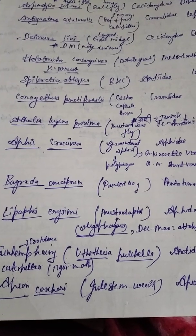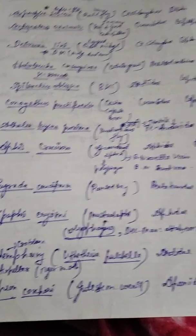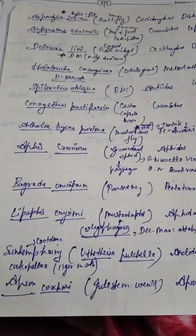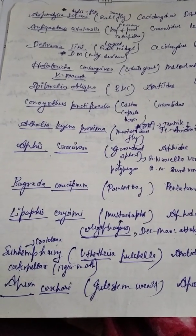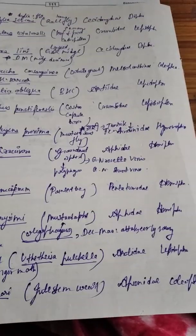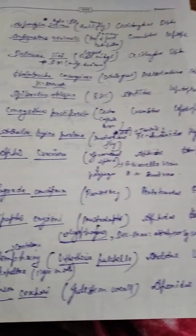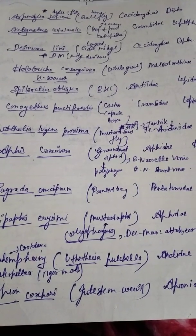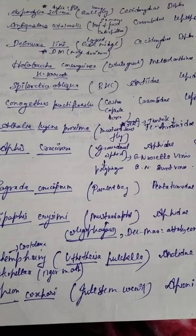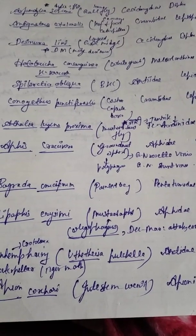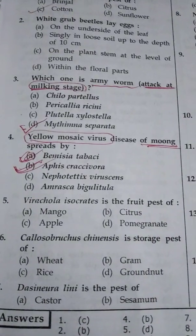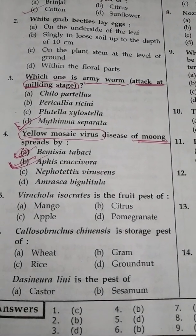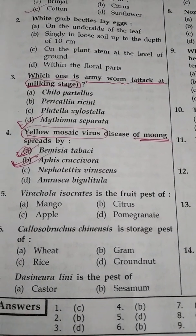Sunhemp hairy caterpillar is Utetheisa pulchella, family Arctiidae, order Lepidoptera. Jute stem weevil is Apion corchori, family Apionidae, order Coleoptera. Though I am telling you the family and orders of all important pests, you have to remember at least the botanical name of all. White grub lays egg in loose soil up to a depth of 10 cm.